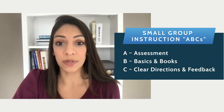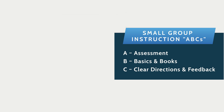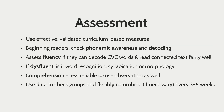A is for assessment — which assessments do you want to use? The authors recommend using effective, validated, curriculum-based measures. For beginning readers, check phonemic awareness and decoding skills. If students can decode CVC words and read connected text pretty well, assess their fluency. If you find they are disfluent, try to diagnose the source — is it word recognition, syllabication, or morphology? For comprehension measures, these can be less reliable than decoding or fluency measures, so also use your observational skills. Finally, groups should remain flexible, and the authors recommend checking group composition every three to six weeks using your progress monitoring data.